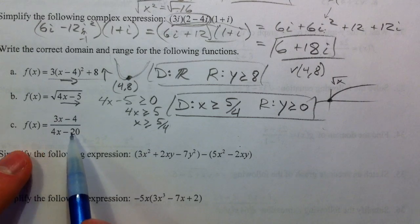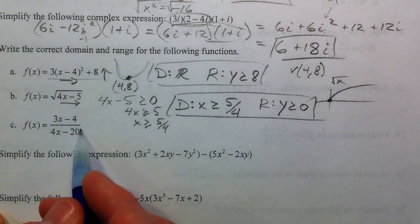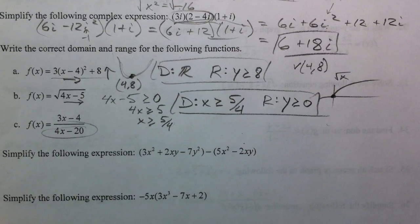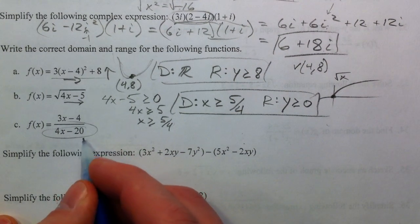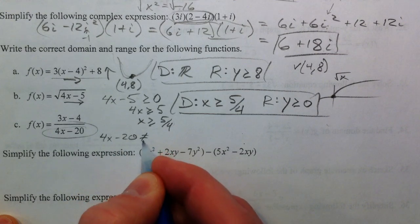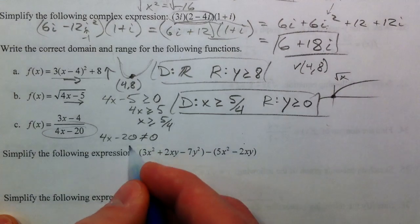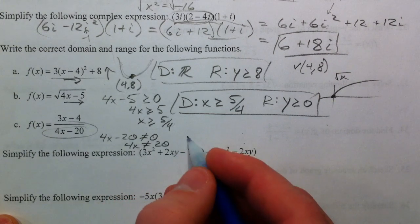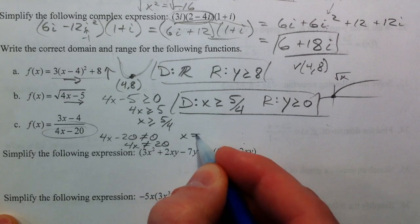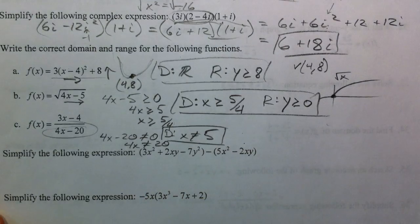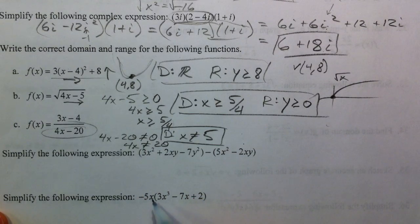This one is the rational function we just got done with, and the problem here is with the denominator. What happens with your denominator is you can't divide by 0. So we want 4x minus 20 not to equal 0. Add the 20, 4x cannot equal 20, so x cannot equal 5. That's your domain. x can't equal 5. That's where your vertical asymptote shows up.